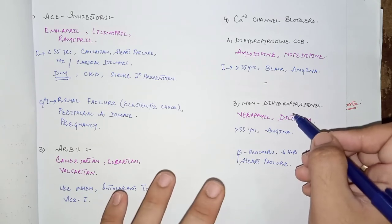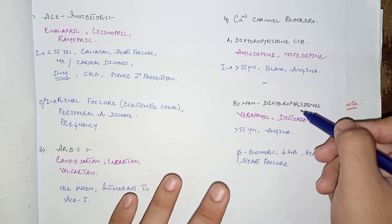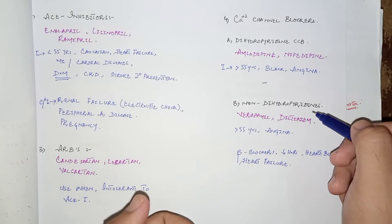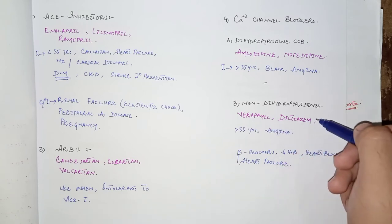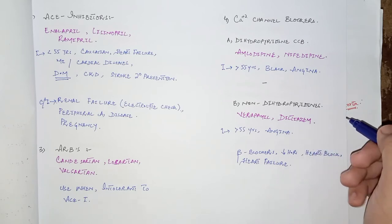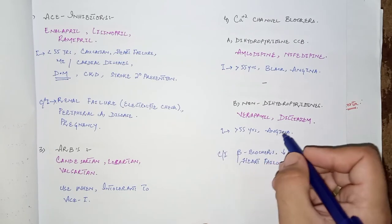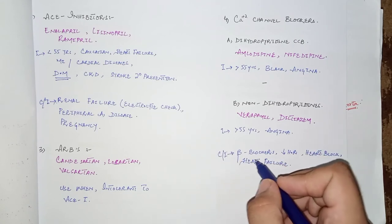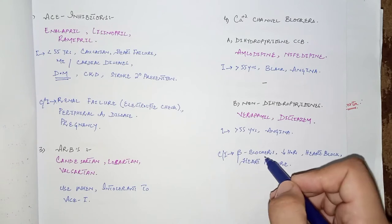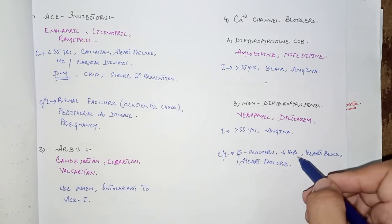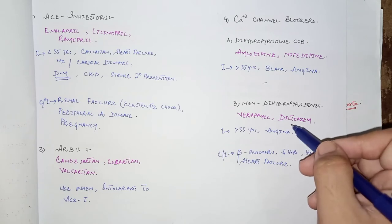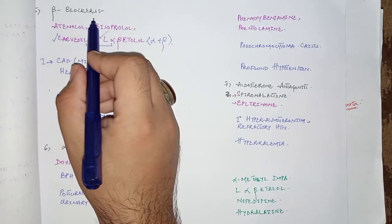Non-dihydropyridine calcium channel blockers act more on the heart, with effects similar to beta blockers, reducing contractility and heart rate — they are negative inotropic agents. These include verapamil and diltiazem. Indications are similar: age more than 55 years and angina with hypertension. Contraindications include concurrent beta blocker use, bradycardia, heart block, and heart failure.